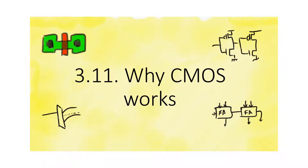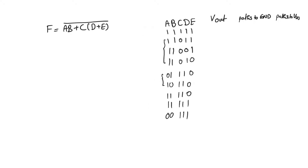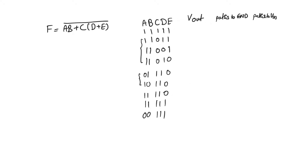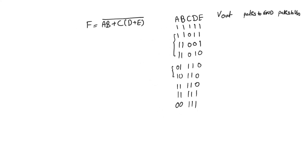In this video we'll take a detour and talk about why CMOS works, why it gives us the outputs and behavior that we get from it, and we will discover that there's one thing about CMOS that really matters. Let's first start by taking this logic function f = AB + C(D+E), all bar, and implement it.